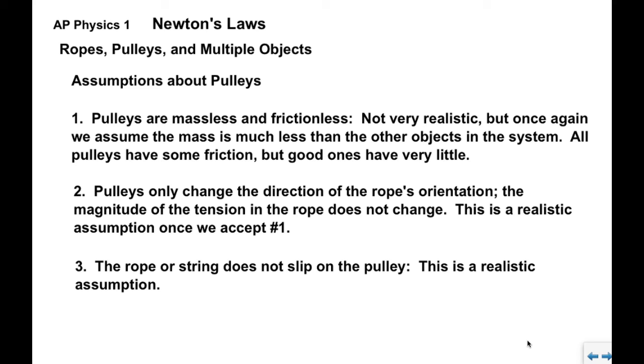The third assumption: the rope or string does not slip on the pulley. This is a realistic assumption. If it does slip, then the pulley is not doing its job. So we can assume that the rope just glides along the pulley and turns the pulley as it goes.